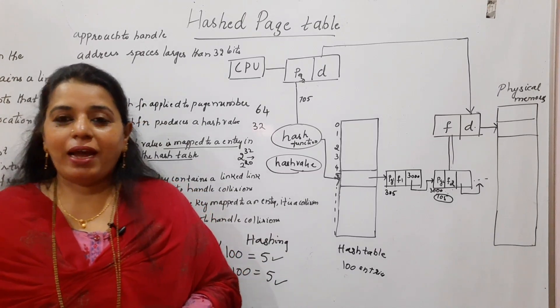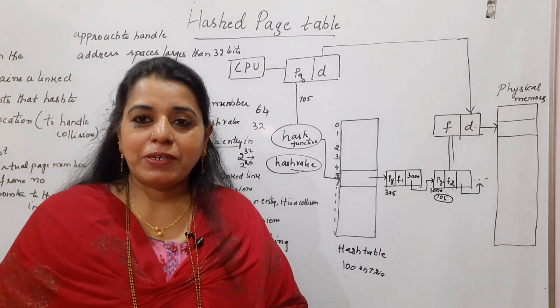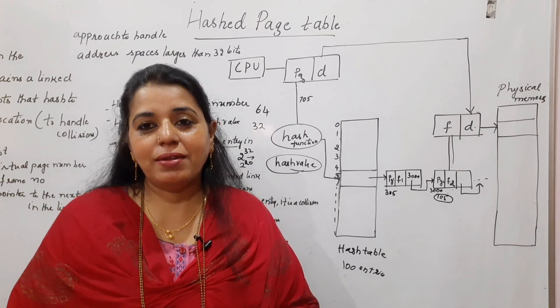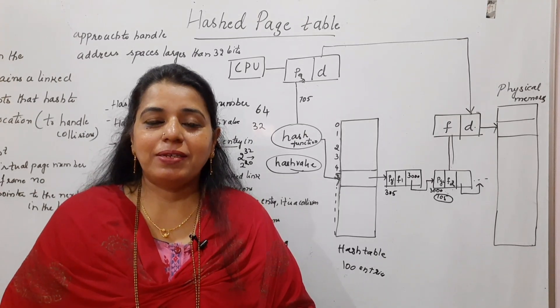We call the tables that are used here to store the page information as the hashed page table. So this is all about the hashed page table. And this was the third type of the page tables. The first one is the hierarchical page table. The second is the inverted page table. The third one is the hashed page table. I hope you find this session useful.